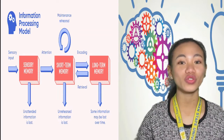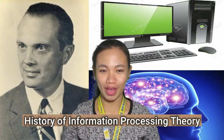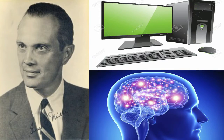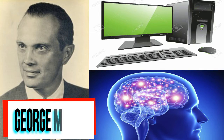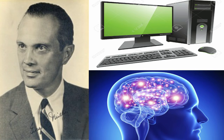History of Information Processing Theory: Developed by American psychologists including George Miller in the 1950s, Information Processing Theory has in recent years compared the human brain to a computer. The input is the information we give to the computer or to our brains, while the CPU is likened to our short-term memory and the hard drive is our long-term memory.